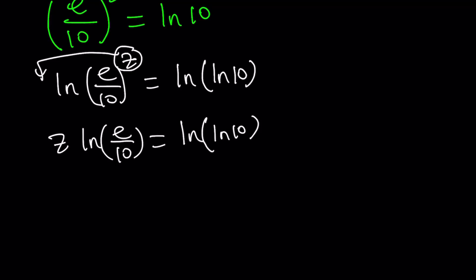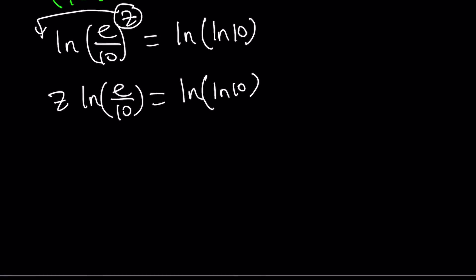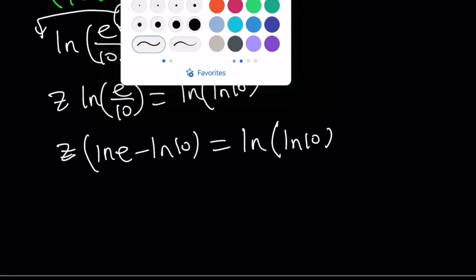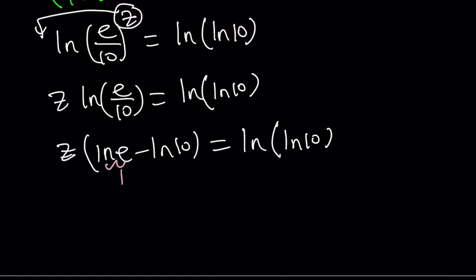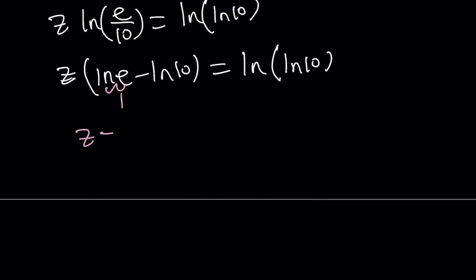And finally, we can just go ahead and isolate z from here. But notice that this can be written as ln e minus ln 10. And ln e is equal to 1. Therefore, this just becomes 1 minus ln 10. And upon division, z becomes ln ln 10 divided by 1 minus ln 10. And that just becomes z.